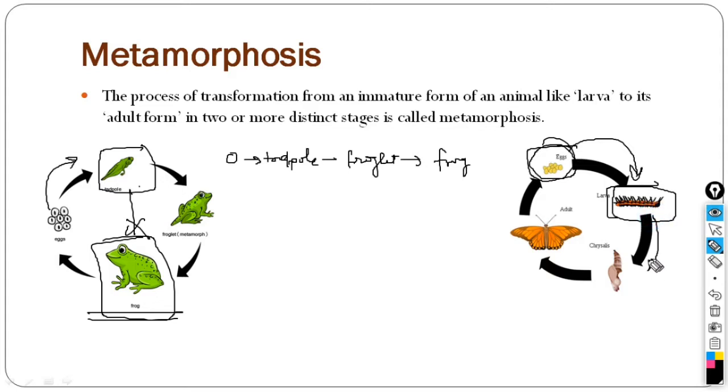After that, it grows and grows more. This is pupa, which we call chrysalis. What we call chrysalis.